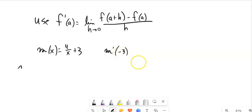So let's set it up. M prime, the derivative of M at that value is the limit as H approaches 0. Remember that H is that wiggle of the function with A, A being negative 3, plus H put in it. So I'm going to have 4 over negative 3 plus H. Remember that's just taking place at the X, plus 3.